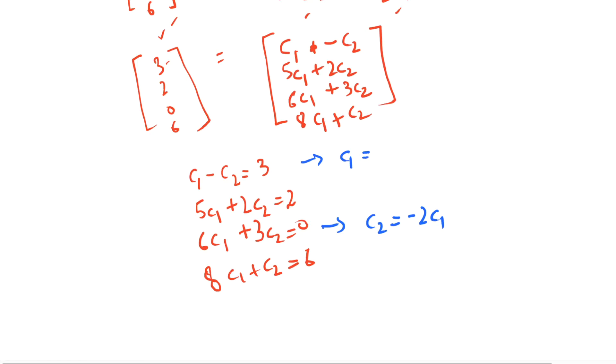get c1 is equal to c2 plus 3. And we already know what c2 is from equation 3, so we can plug in the value here. So this will become minus 2c1 plus 3. Using these two equations, we can see that c1 will be 1 and c2 will be minus 2.